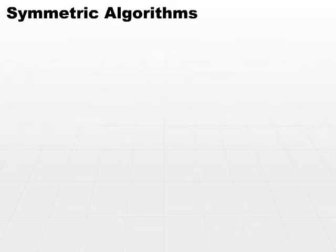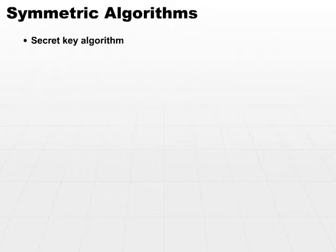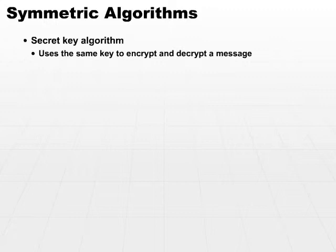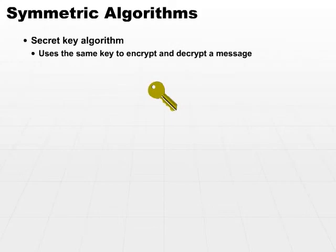There are two basic categories of algorithms: symmetric algorithms and asymmetric algorithms. A symmetric algorithm is often called a secret key algorithm, because we use the same key to encrypt and decrypt a message. That means both the receiver and the sender need to have the same key, and if the key is not secret, then it's not a secure algorithm.